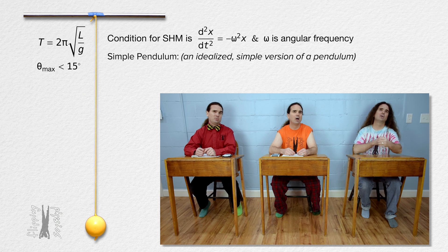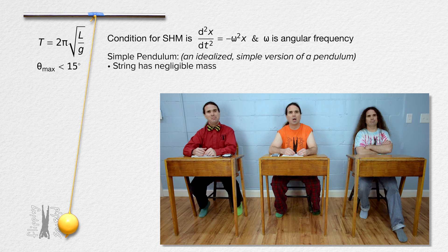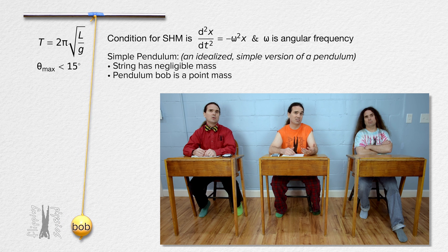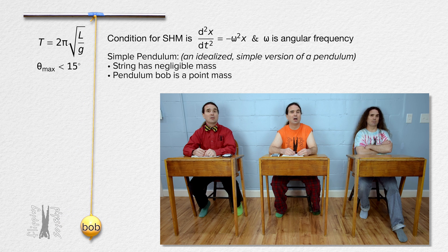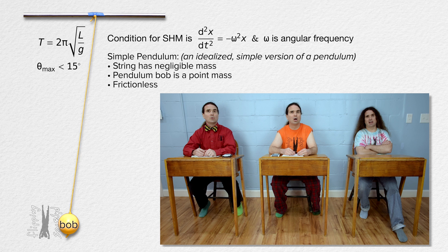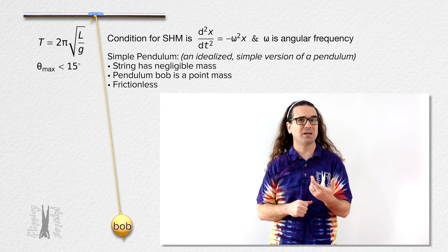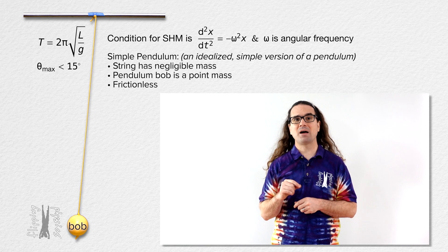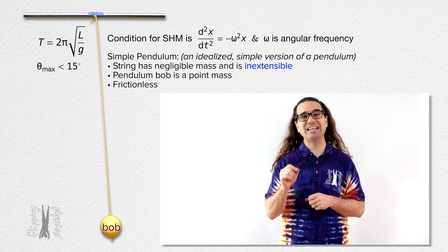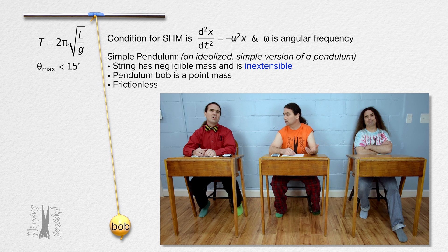We have assumed the string of each of our pendulums has negligible mass. Is that part of what it means to be a simple pendulum? Yes, exactly. We have assumed the pendulum bob is a point mass, meaning it has no shape and zero size. And we have assumed there is no friction, either with the medium the pendulum bob is moving through, or between the string and whatever it is attached to at the very top. A simple pendulum also assumes the string is inextensible — incapable of being extended — meaning the length of the string will never change.